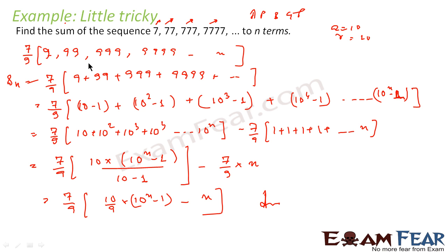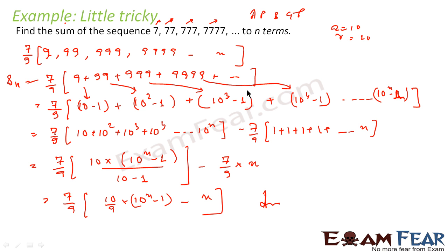Please note: whenever you have a sequence in this form — for example, 3, 33, 333, 3333... — you can write it as (3/9) × (9 + 99 + 999 + ...). The reason is 9 = 10 minus 1, 99 = 10² minus 1, 999 = 10³ minus 1, and so on, so you get a GP out of this. Such kind of questions come in exams — understand the pattern.